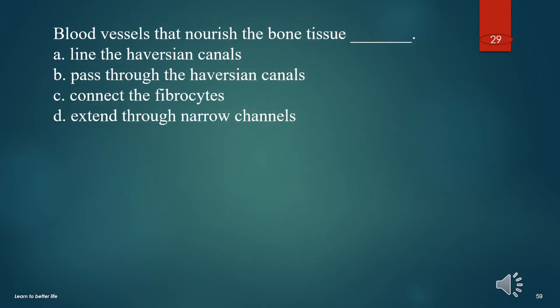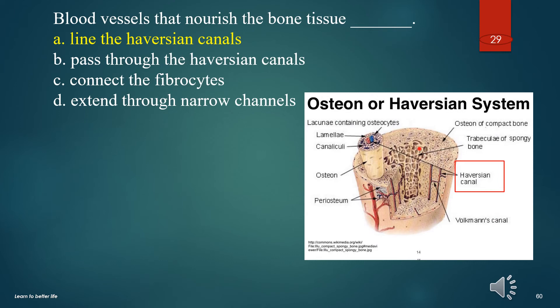Blood vessels that nourish the bone tissue? A. Lend the Haversian canals. B. Pass through the Haversian canals. C. Connect the fibrocytes. D. Extend through narrow channels. The answer is A. Line the Haversian canals.